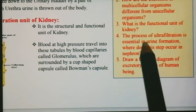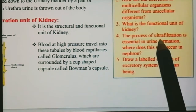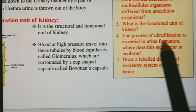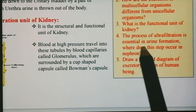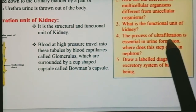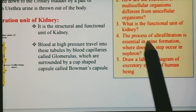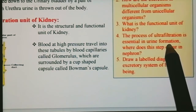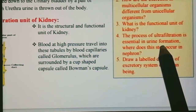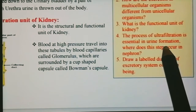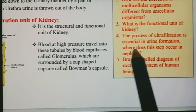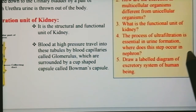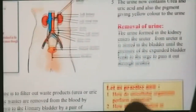Question number 4: The process of ultrafiltration is essential in urine formation. यह बहुत important है। Ultrafiltration मतलब जो बिल्कुल नहीं चाहिए body से वो ही बाहर निकालना है — ऐसा नहीं कि हम wanted things को remove करते हैं। तो where does this step occur in the nephron? Nephron में कहाँ होता है?